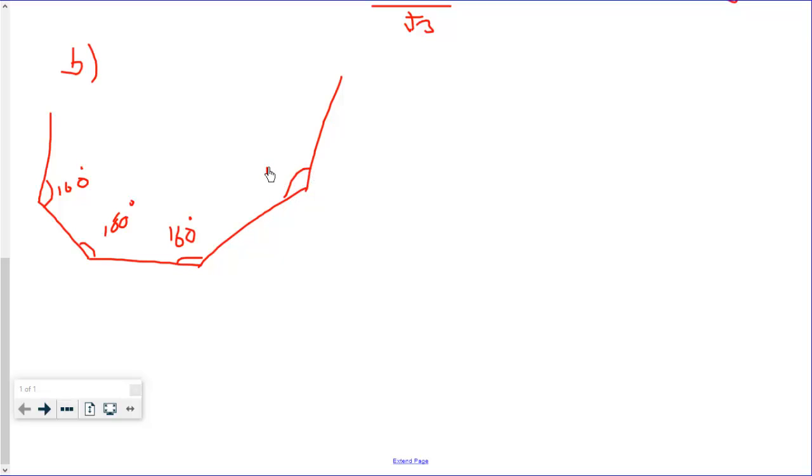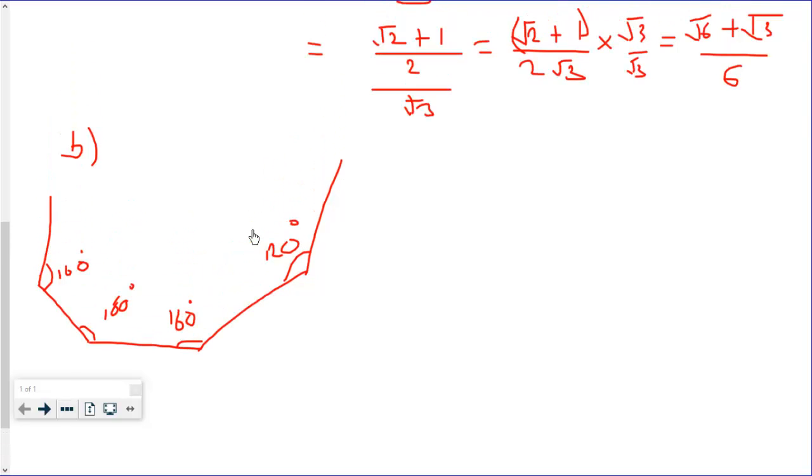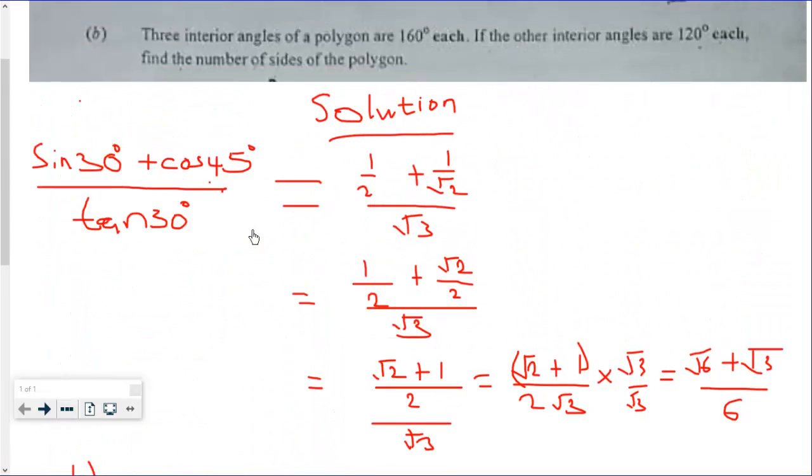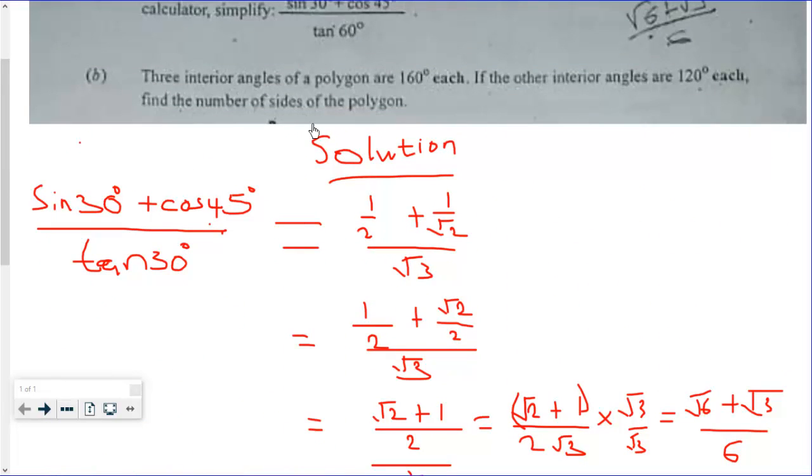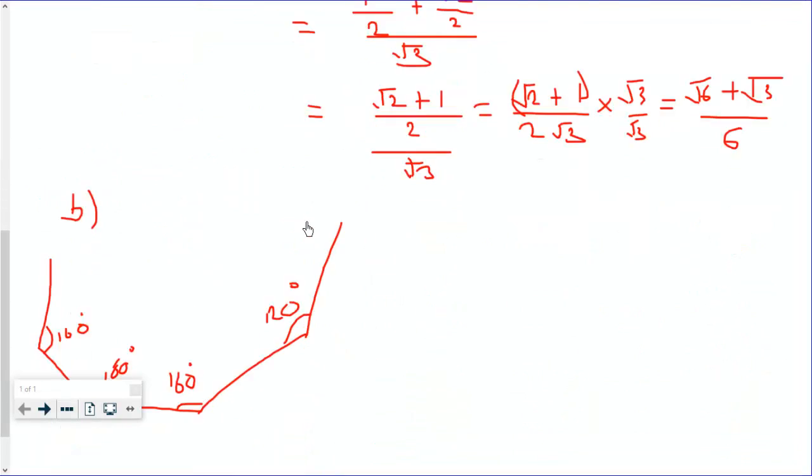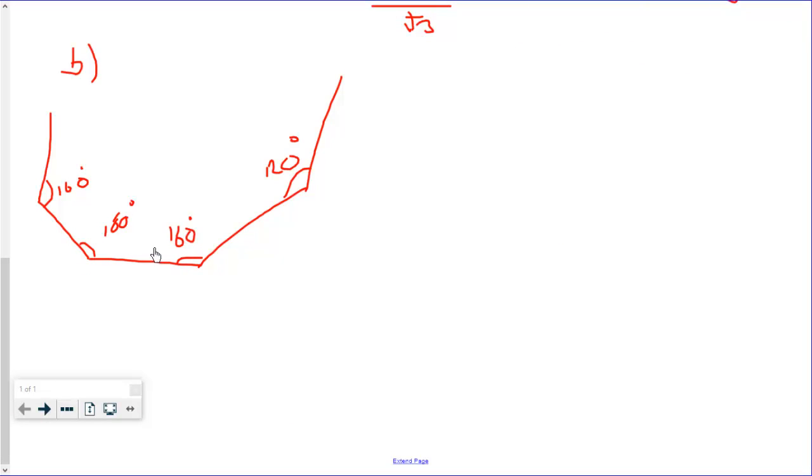Find the number of sides of the polygon. Now we know that the exterior and interior angle will give us 180°, whether the polygon is regular or irregular. So this will be 20°, then this will also give us 20°.